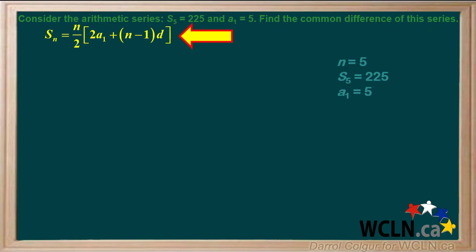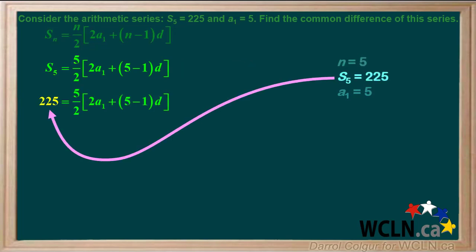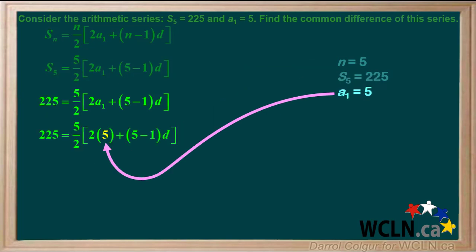This is the equation for the sum of an arithmetic series when we know N, A1, and D, but not the last term. Because N equals 5, we'll replace each N in the formula by 5. The sum S5 equals 225, and term A1 is 5.